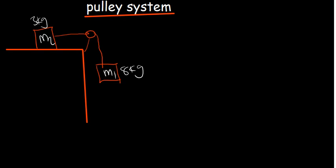The rope creates a tension force. Because m1 and m2 are connected to the same rope, the tension force is the same at any point along it — T1 equals T2. The first thing we need to understand is how to calculate the acceleration.